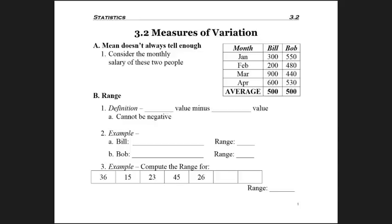Bob could have afforded a $400 a month rent every month. So knowing their average salary didn't help. We want to know something else. So in this case, let's look at their range, the salary range.